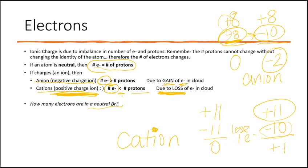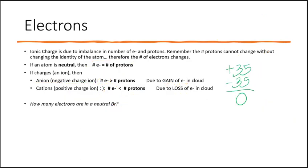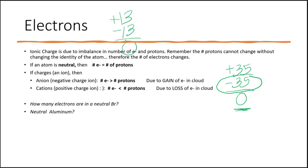How many electrons are in a neutral bromine? Bromine has 35 protons, so to be neutral it needs 35 electrons. What about a neutral aluminum? Aluminum has 13 protons, so it needs 13 electrons to be neutral — overall zero charge.